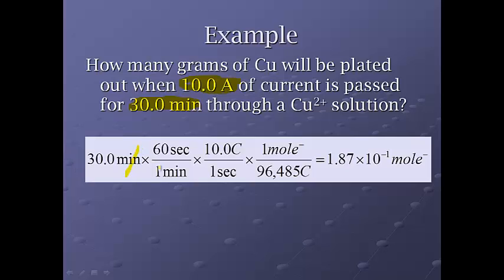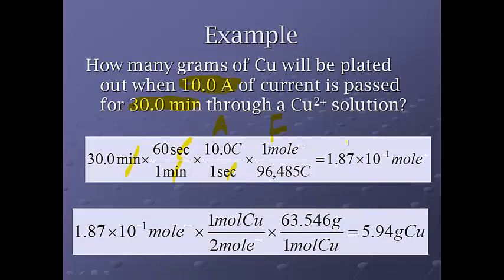So anyway, we do have to go from minutes to seconds because the ampere unit is coulombs per second. We then go from seconds to coulombs using the ampere. Then we use the Faraday, and that gets us to 1.87 times 10 to the negative first moles of electrons. Now for this particular reaction, we're dealing with copper 2. We're going to go from copper 2 to regular old copper, and we need 2 electrons. So that's why we have 2 moles of electrons for every 1 mole of copper. Then we just do the molar mass of copper to figure out that we would have 5.94 grams of copper.